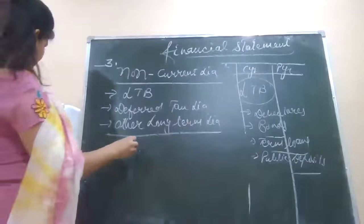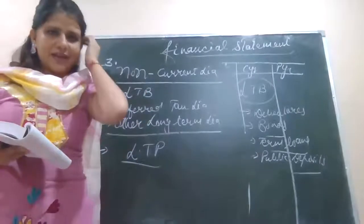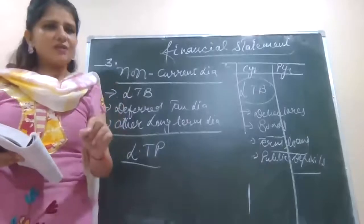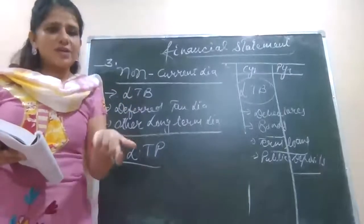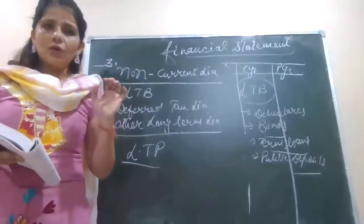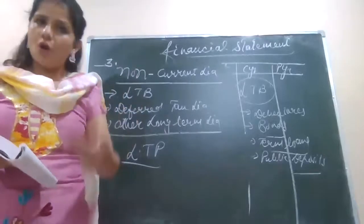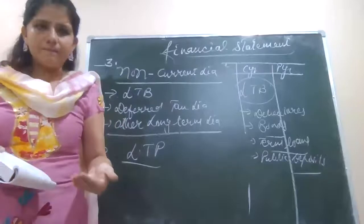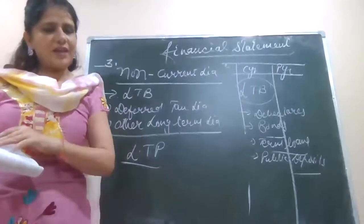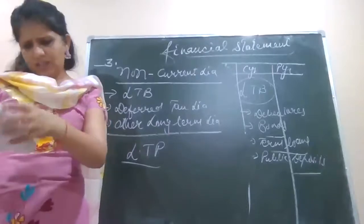Under the fourth subhead we have long-term provisions. Big companies create provisions to pay certain long-term liabilities. For example, in order to redeem debentures the company has created certain provisions, or to pay warranties to customers — like a washing machine with a five-year warranty or an air conditioner with a five-year compressor warranty. That's why we call them long-term provisions.